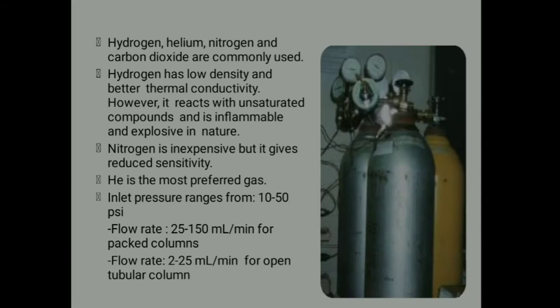Hydrogen, helium, nitrogen, and carbon dioxide are commonly used carrier gases. Hydrogen has low density and better thermal conductivity; however, it reacts with unsaturated compounds and is invariably explosive in nature. Nitrogen is inexpensive but gives reduced sensitivity. Helium is the most preferred one. Inlet pressure ranges from 10 to 15 psi. Flow rate is about 25 to 150 ml per minute for packed columns, and around 2 to 25 ml per minute for open tubular columns.